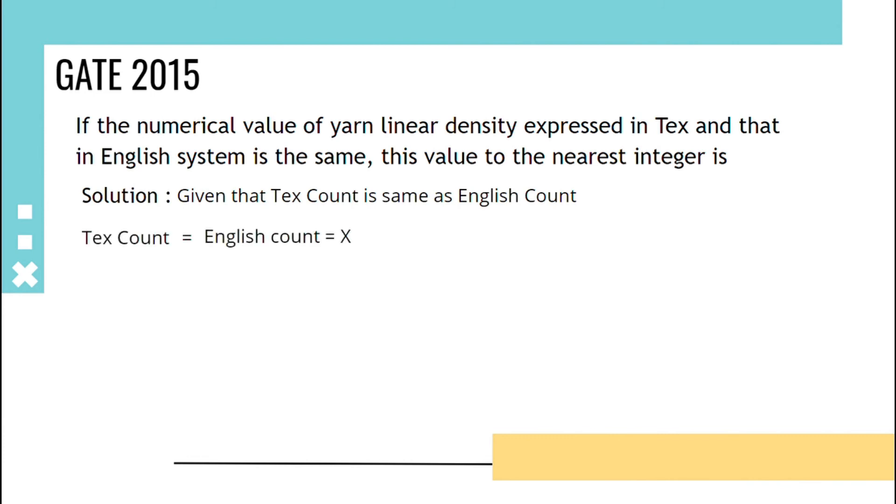Using conversion formula for Tex to English count, Tex equals 590.5 by English count. Replacing Tex and English as X, it becomes X equals 590.5 by X, X squared equals 590.5. Taking square root of 590.5, we will get the answer as 24.3.